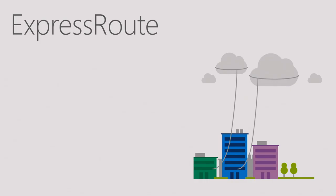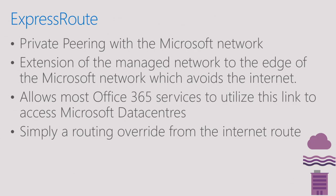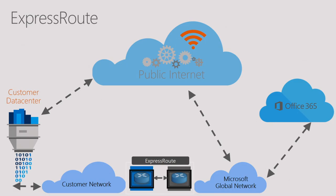Express Route is just a private peering — a routing override where rather than use your ISP to get from the edge of your network to Microsoft's peer point, you have a private network connection that does that. That might not give you any better performance, but it does give a more reliable connection — you know you've got, say, one gigabit of bandwidth reserved for your Office 365 traffic. Most Office 365 services, but not all — which is why we still need the internet — will utilize that link if available. It does not connect you into the data center; it connects you to the edge of Microsoft's network, likely the same point as your ISP.